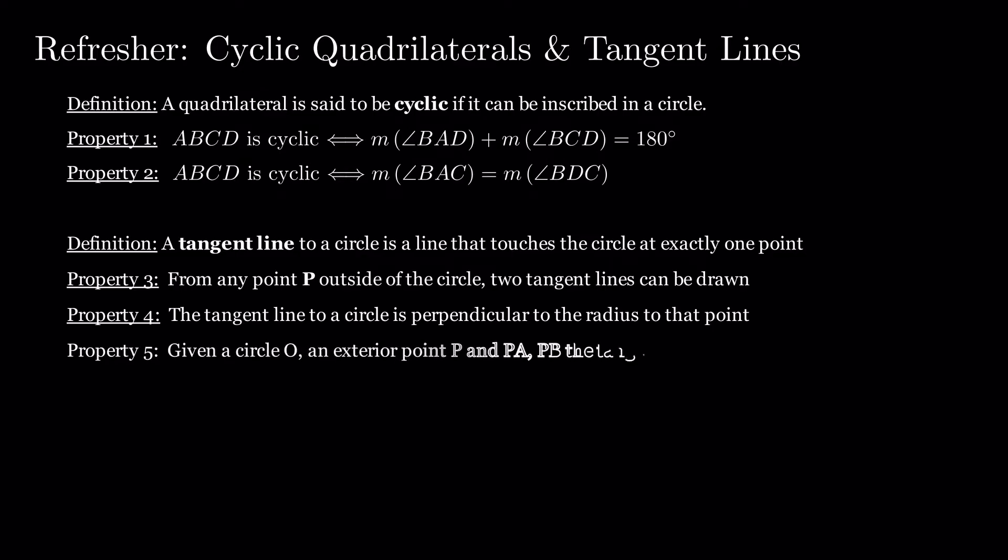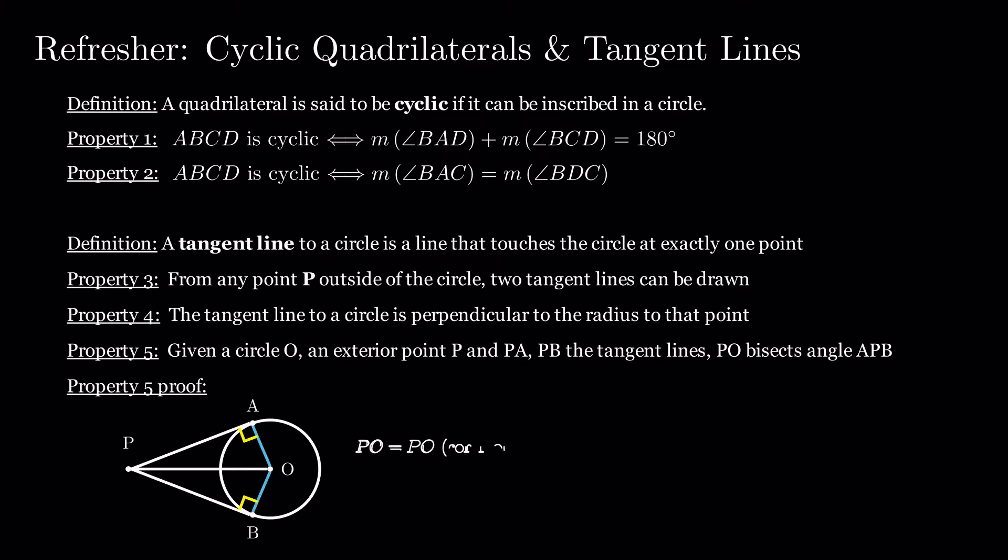And lastly, given a circle O, an exterior point P and PA, PB the tangent lines, PO bisects the angle APB. Let's prove this last property. Given that PO is a common side, angles PAO and PBO are both equal to 90 degrees, and OA and OB are equal as radii of the circle, triangles PAO and PBO are congruent.